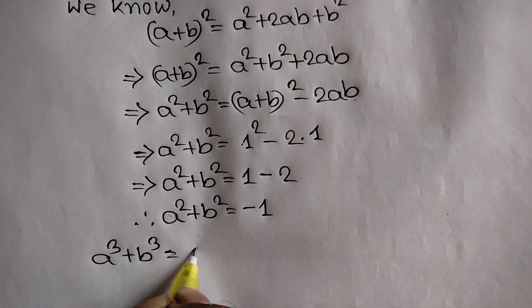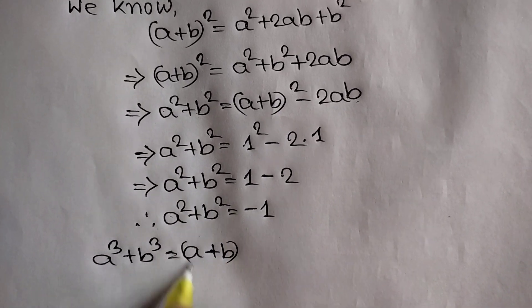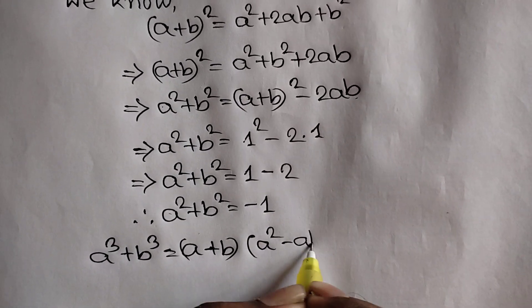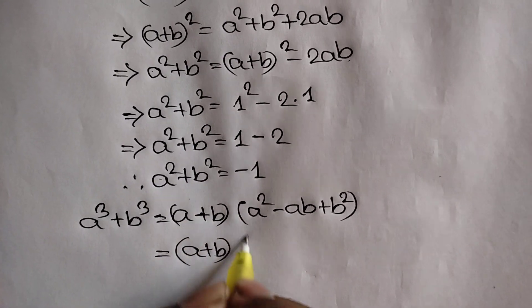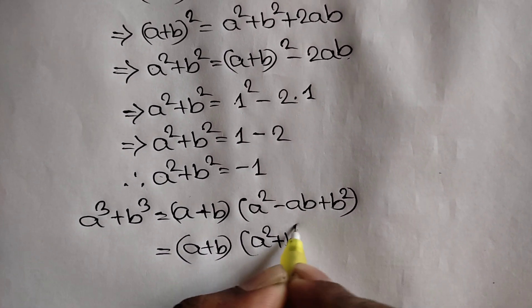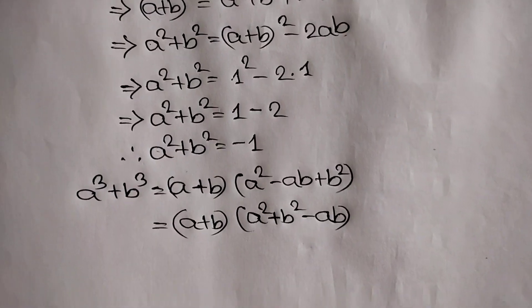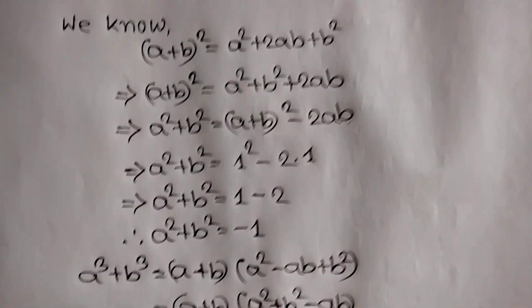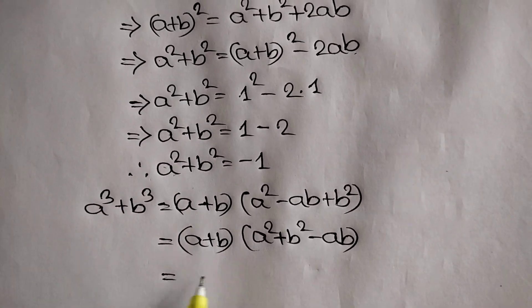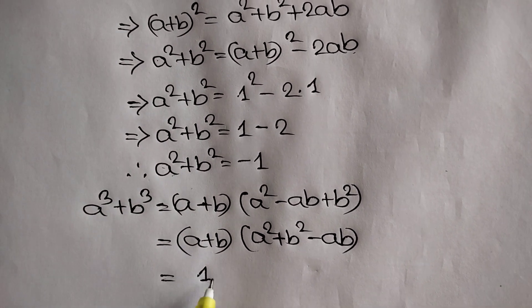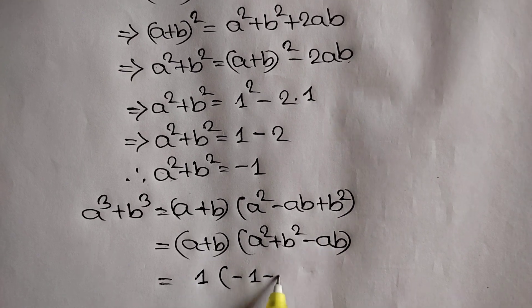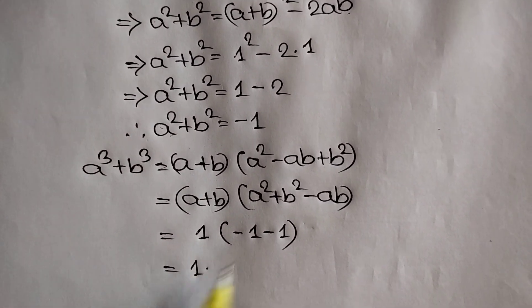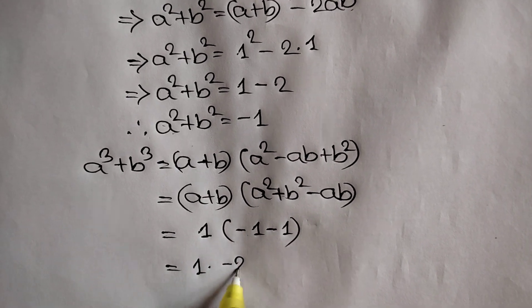Now we know a cube plus b cube is equal to a plus b times a square minus ab plus b square. Rearranging, that is a plus b times a square plus b square minus ab. Substituting: 1 times negative 1 minus 1, which gives negative 2.